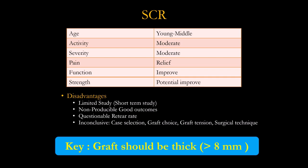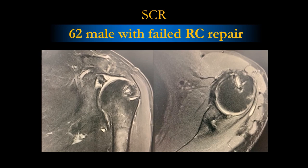Importantly — and I discovered this with him — you need a thick graft, more than 8 millimeters. If the graft is too thin, you don't get the soft tissue buffer effect. Thick fascia lata graft is essential. That's why Teru Mihata's results differ from European results using dermal patch — dermal patch is very thin and cannot be compared to true superior capsular reconstruction.